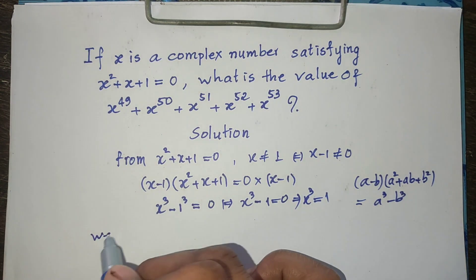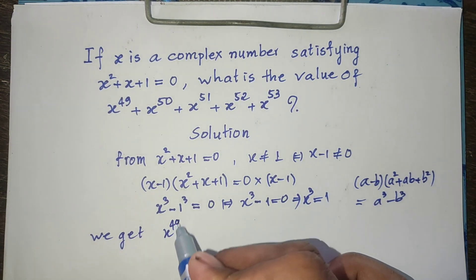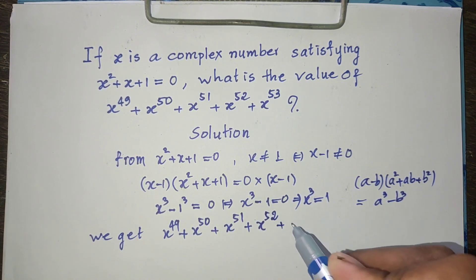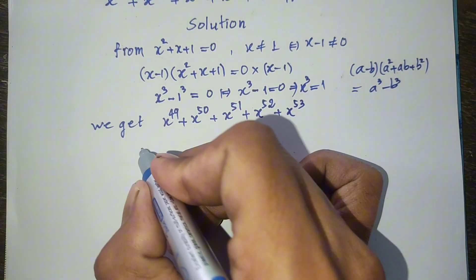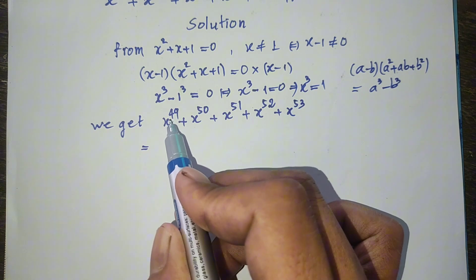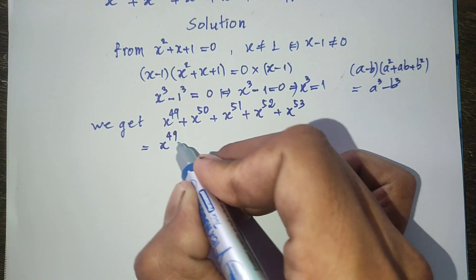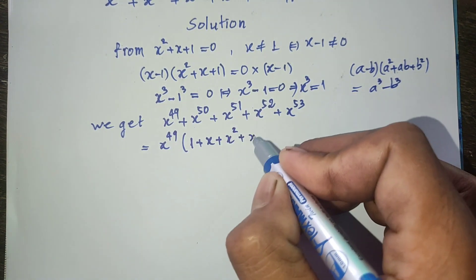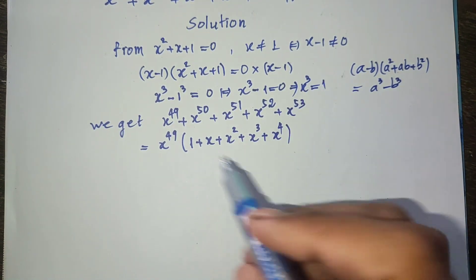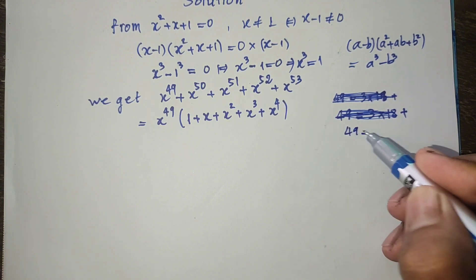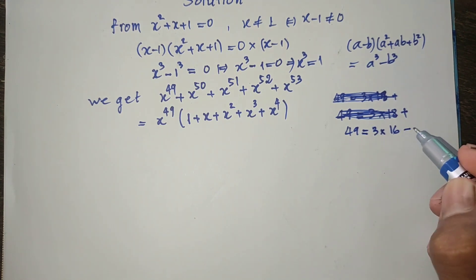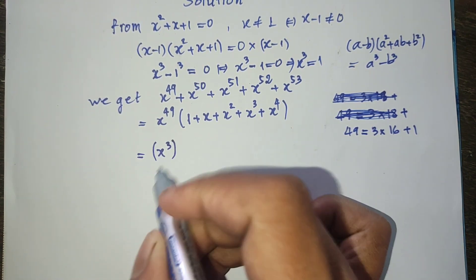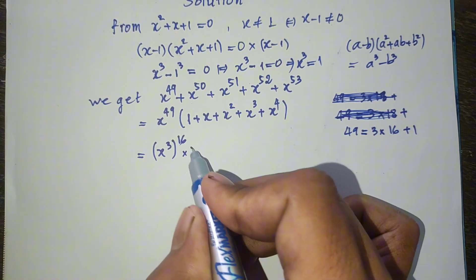So we get h power 49 plus h power 50 plus h power 51 plus h power 52 plus h power 53, which equals h power 49 taken out as a factor, multiplied by 1 plus h plus h squared plus h cubed plus h power 4.